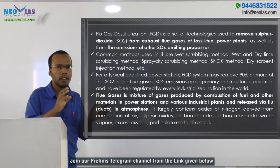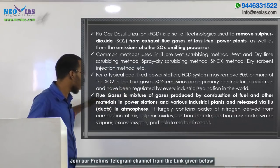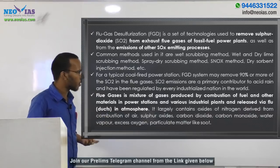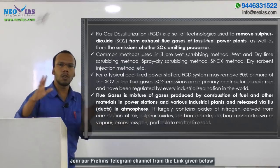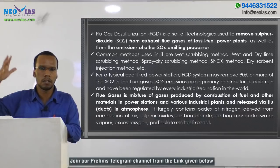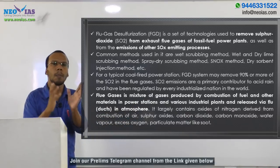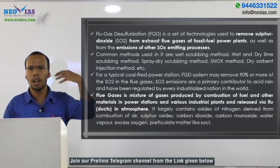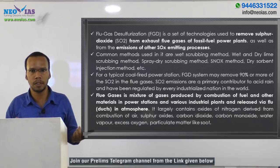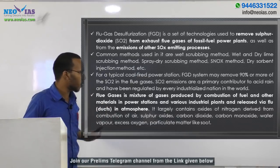Flue gas is the gas produced after combustion of fossil fuel. Flue gases are a mixture of gases produced by combustion of fuel and other materials in power stations and various industrial plants, released via a flue — a duct — to the atmosphere. When you visit industries, you will see tall duct-like structures; those are flues. They are large tunnel-like openings through which waste gases are released to the atmosphere.